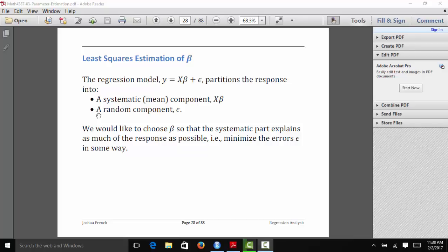Just like we did for simple linear regression, we want to choose beta so that the systematic part explains as much of the response as possible, i.e., we want to minimize the errors in some way.